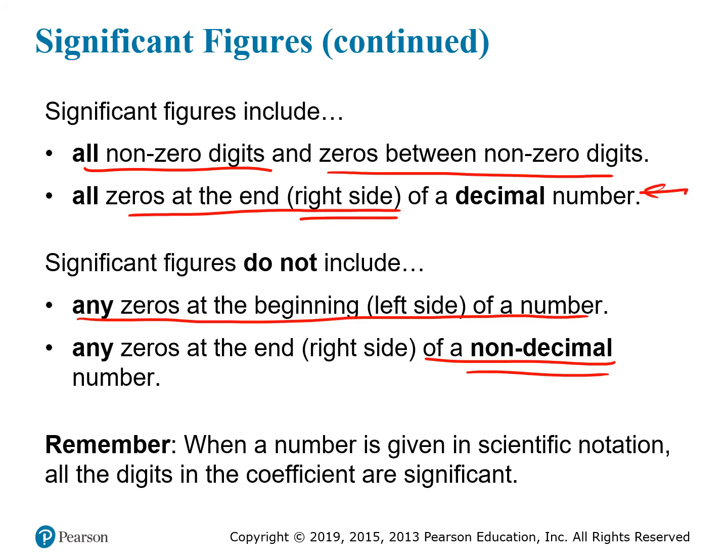The last point here is not really a separate rule, but it may help you to remember that when a number is given in scientific notation, we can assume all the digits in the coefficient are significant. We already saw this in action when we learned in the last chapter that you keep all the significant figures in a number when you write the coefficient.